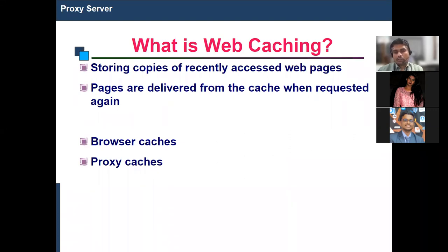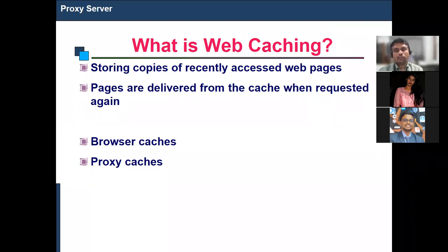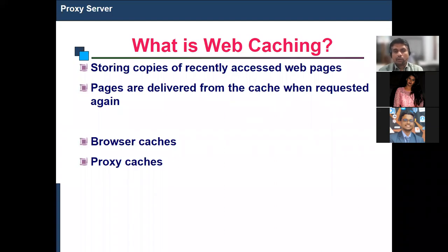Web caching stores copies of recently accessed web pages. The data is stored locally so you need not access the server again. Without caching, every request would travel through the proxy, then the ISP, then to the corresponding server, and back — which takes more time. With caching, if you visit the same page again and again, it is stored locally. You can refresh to get updated information.